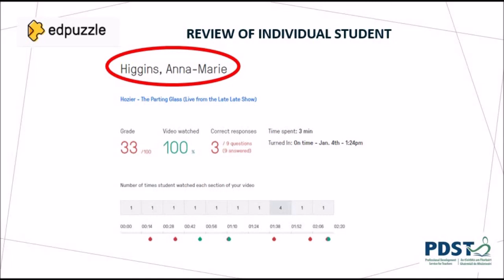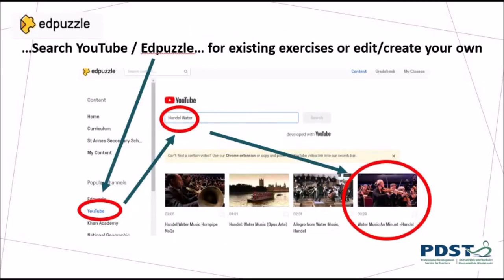There is also a review of class progress where you can see what percentage of questions were answered correctly, the percentage of incorrect answers, as well as segments that students had most difficulty with. In creating your content, you can choose from the bank of existing exercises on Edpuzzle, or you can select videos from YouTube to edit or create your own Edpuzzle exercise. All of these are saved in your Edpuzzle account.